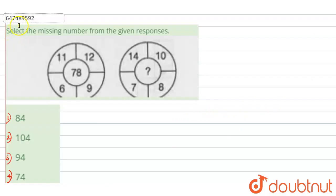Hello everyone, today we will solve the question. The question says: select the missing number from the given responses. This is a figure given to us, and this is another figure. Four options are given: option 1 is 84, option 2 is 104, option 3 is 94, and option 4 is 74.